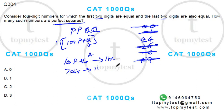11. 7 plus 4 is 11. Multiple of 11. So 7744 will be your perfect square. 7744 will be your perfect square. There is only one such number possible. That finishes this question.